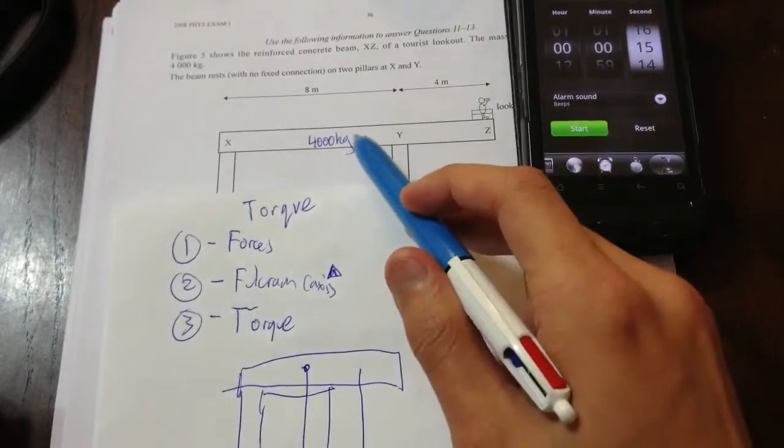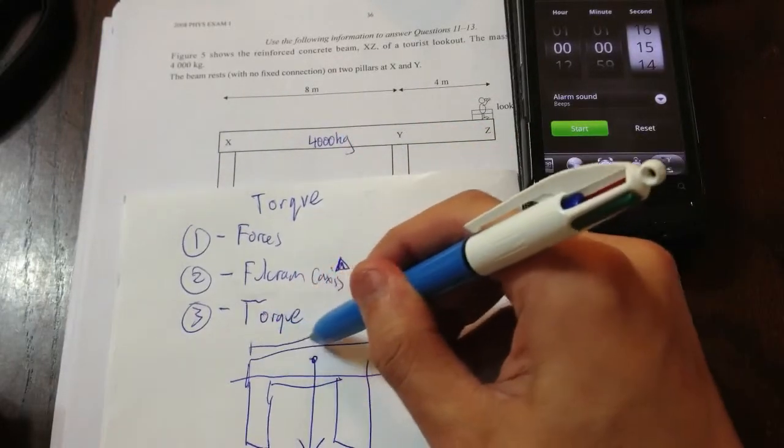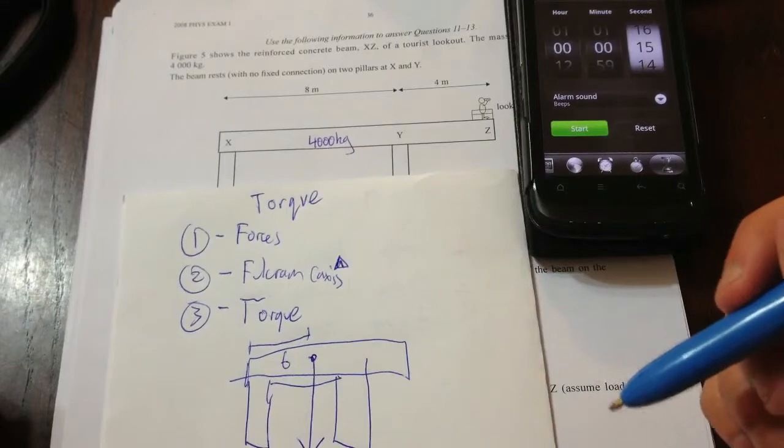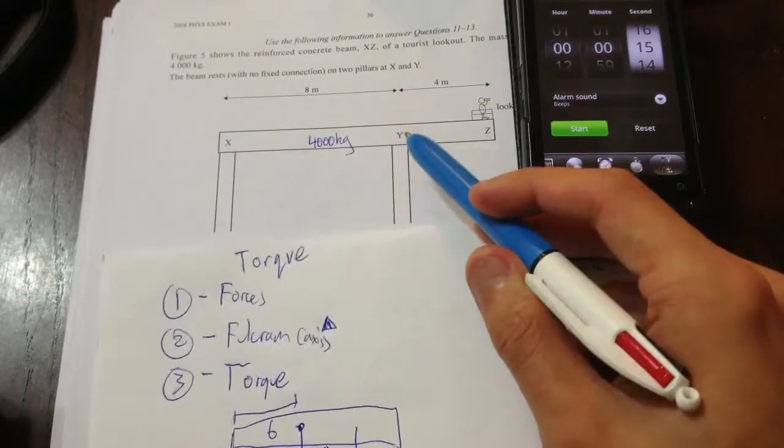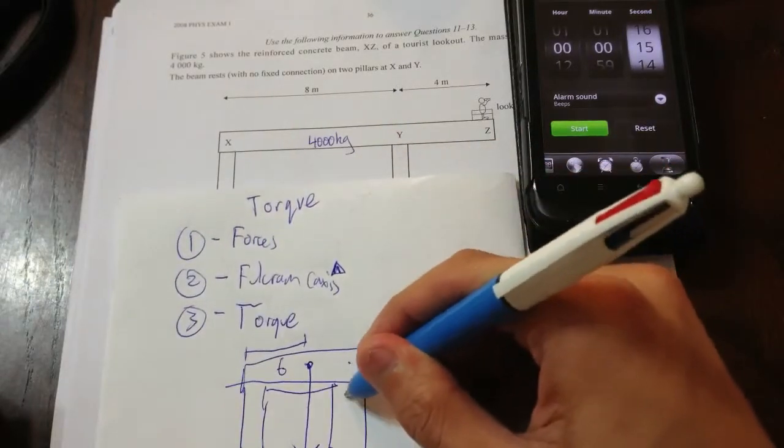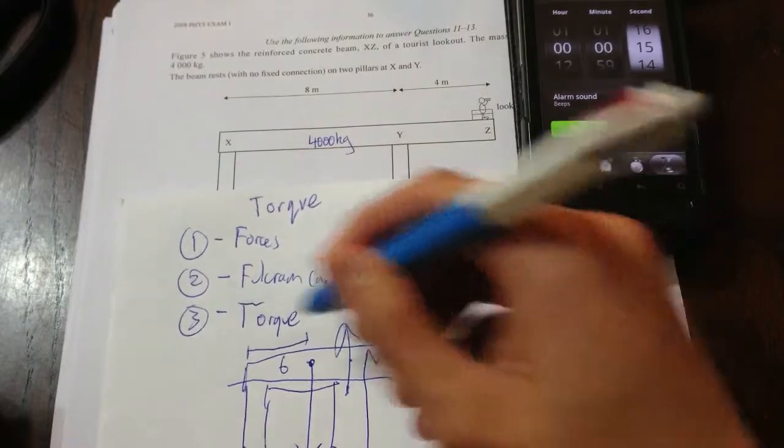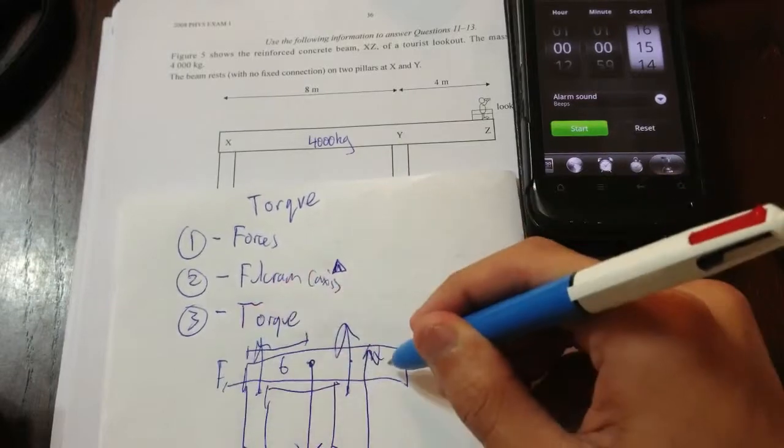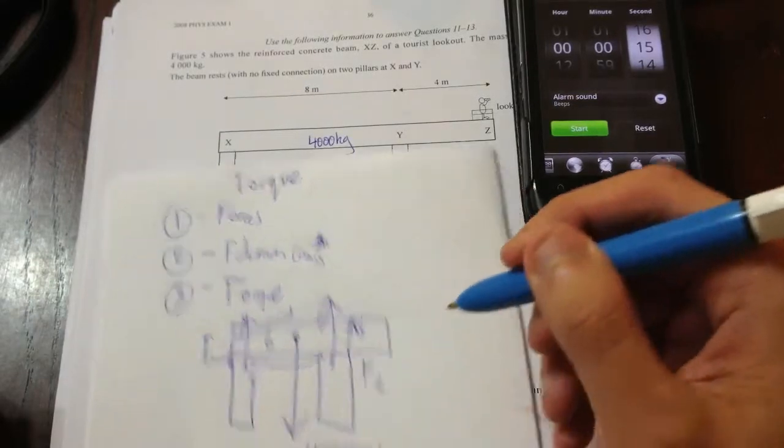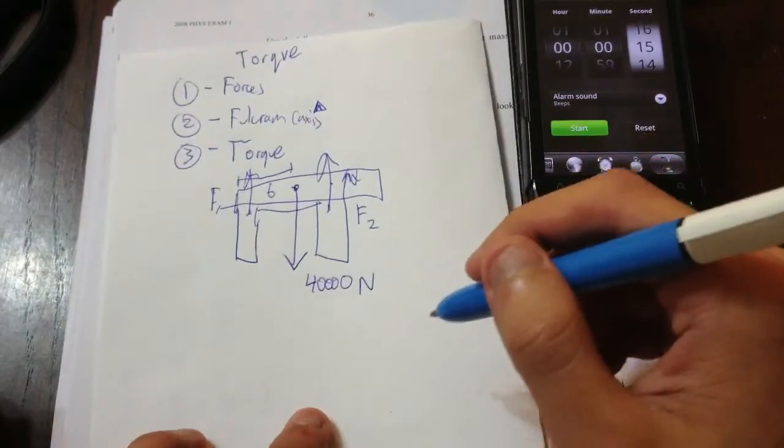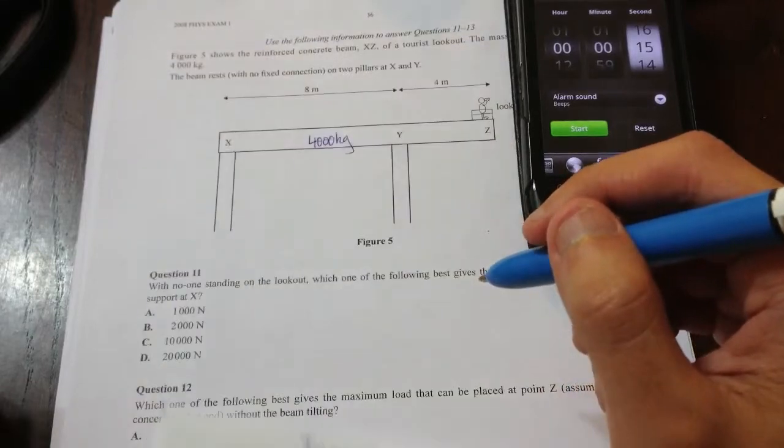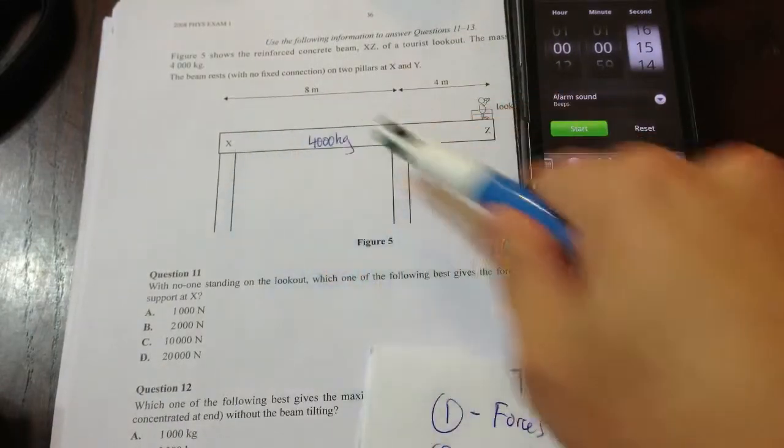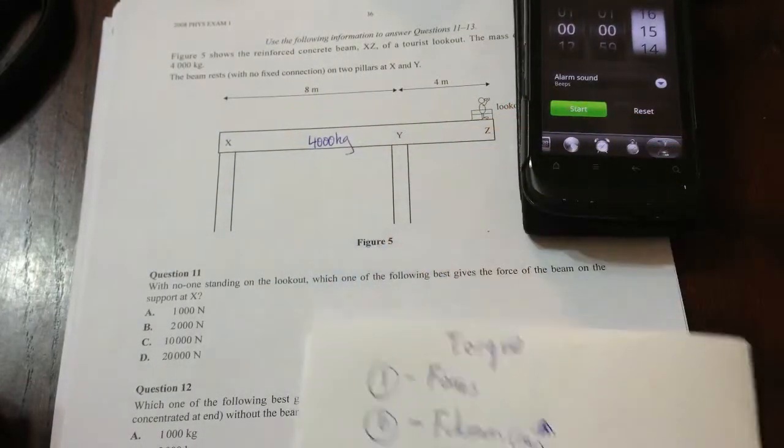Now, where is it placed? We know it's in the middle of the beam. So, it should be 6 meters from this side. Next, we have two forces pushing upwards from these pillars. So, I'm going to call them F1 and F2. I know this is kind of messy. But, hopefully, that's okay for you. So, F1, F2, and that's our 40,000 going down.